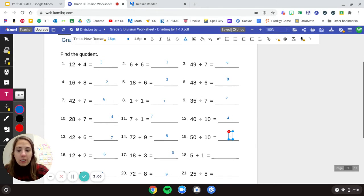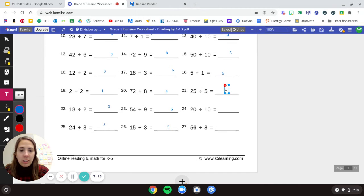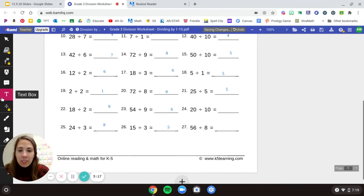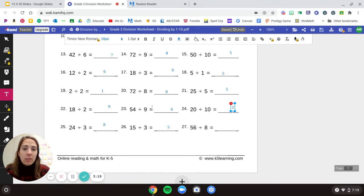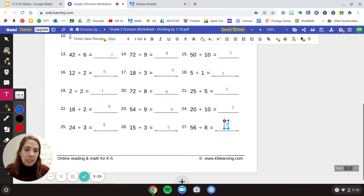50 divided by 10 is 5. 5 divided by 1 is 5. 25 divided by 5 is 5. Lots of 5s there. 20 divided by 10 is 2. And 56 divided by 8 is 7.